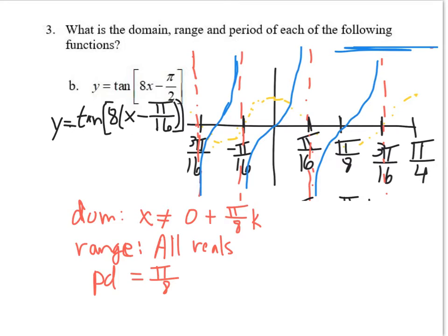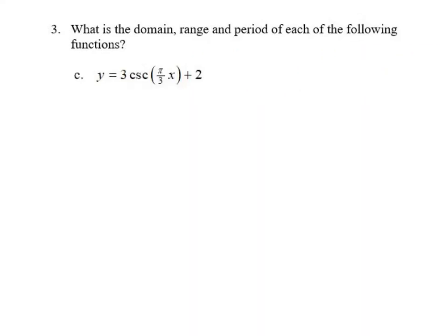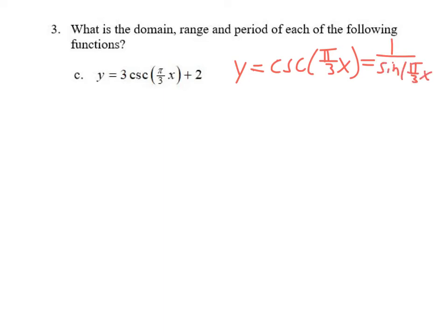For this last example, y = 3csc(πx/3) + 2, there are no horizontal shifts but there are vertical transformations. Let's get the graph of cosecant of (π/3)x, which equals 1 over sine of (π/3)x. Draw some axes and sketch in the sine curve — there's no shift, so dot in the sine curve. The period is 2π divided by (π/3), which equals 6. Halfway through is 3.